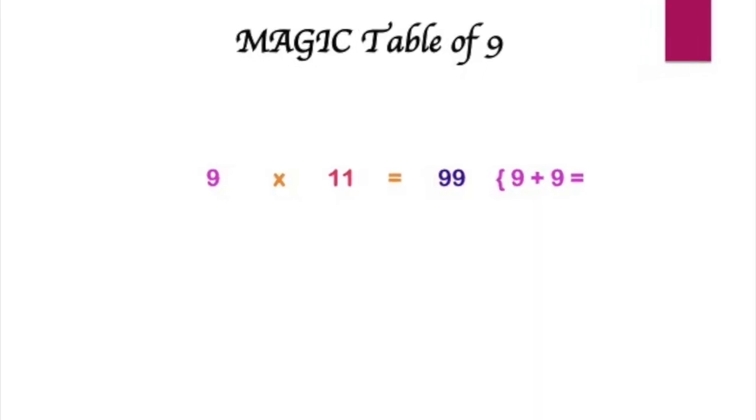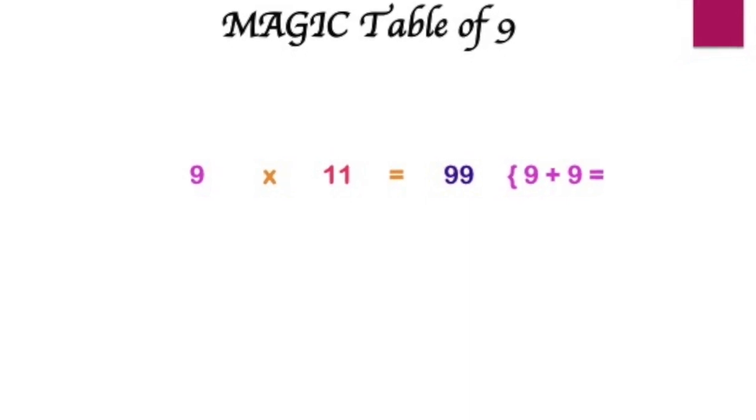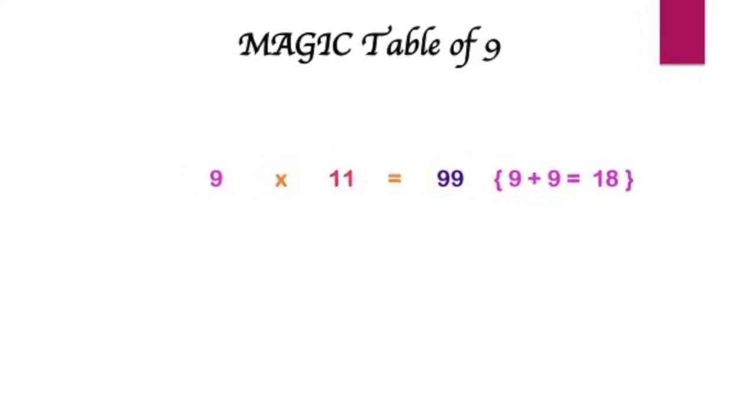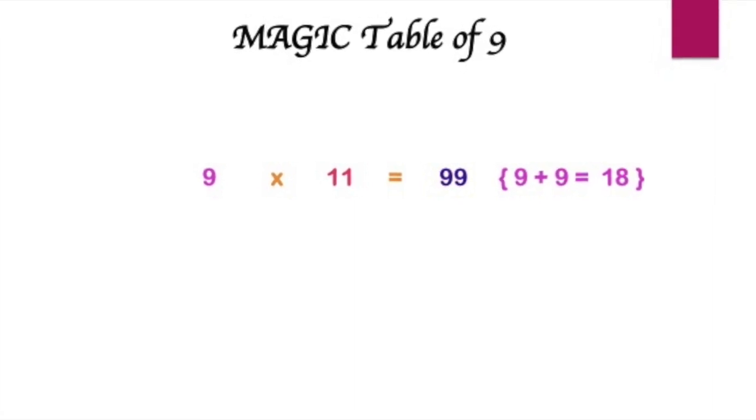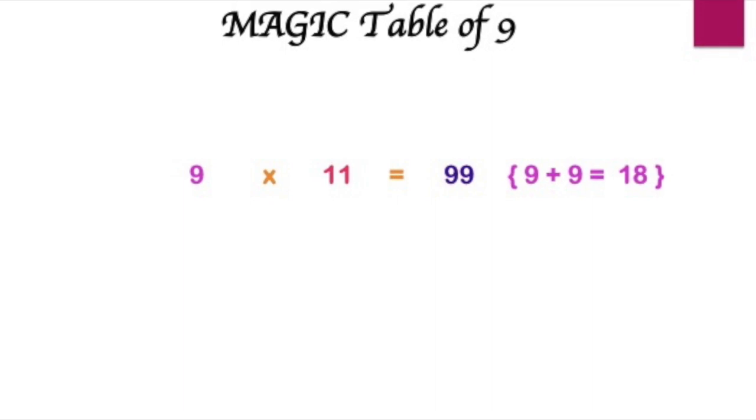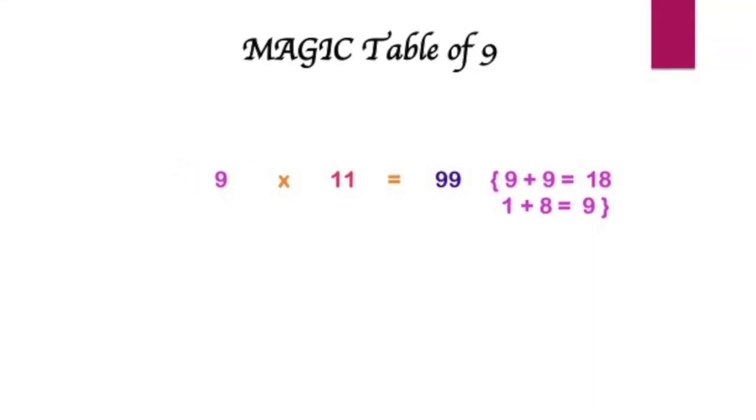What else? Let's see further. What's 9 times 11? We all know. That's 99. But let's see the sum of the digits here. Shall we? 9 plus 9 is 18. But 18 is a 2 digit number. So that further gives us a 9.